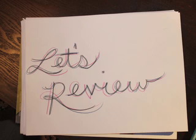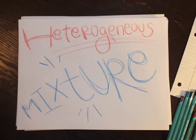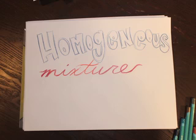Now, let's review these topics one more time. A heterogeneous mixture is where the components are not uniform. A homogeneous mixture is where the components are uniformly distributed throughout the mixture. We hope you found our video useful and helpful, and thank you for watching.